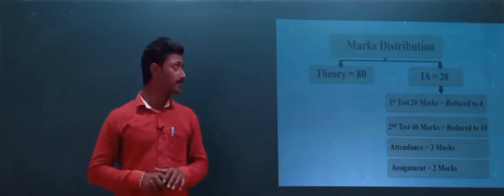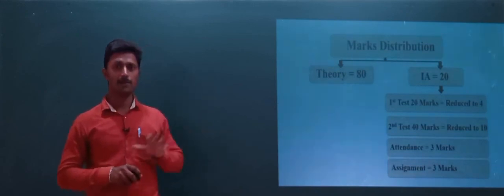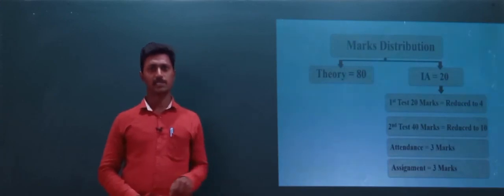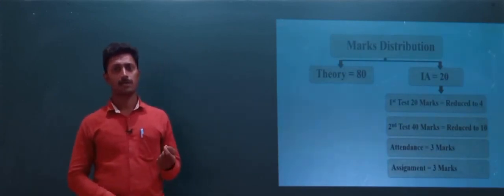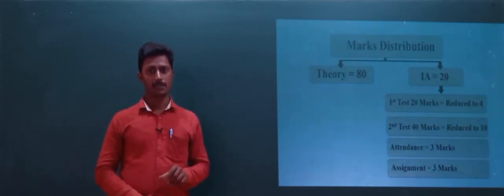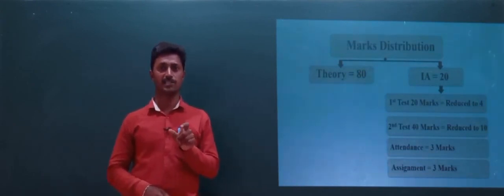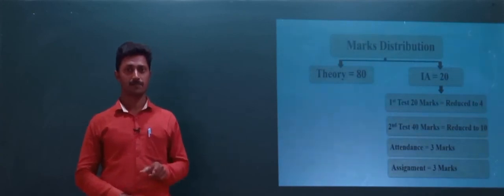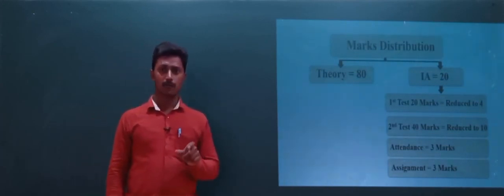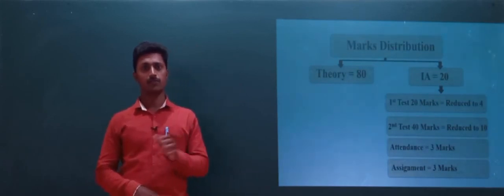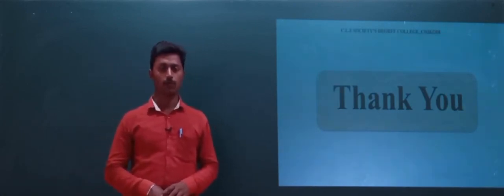Total marks are 100. In this class, we learnt about the sociology syllabus for BA First Semester, CBCS — Choice-Based Credit System. In the next class, we are going to discuss Unit One of sociology. Till then, take care, and thank you very much.